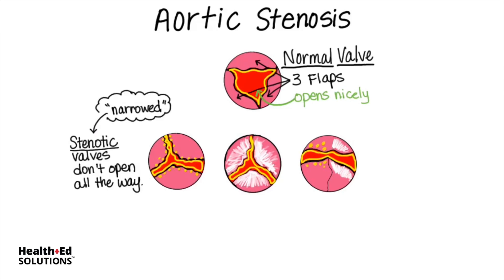The most common cause of aortic stenosis in industrialized countries is calcification of the valve. Calcium from the bloodstream deposits upon the leaflets of the valve, causing it to gradually stiffen and narrow the opening. Hypertension and smoking are risk factors for this condition, which is similar to the risk factors for coronary artery disease. Diagnosis is usually in those over 65 years of age.